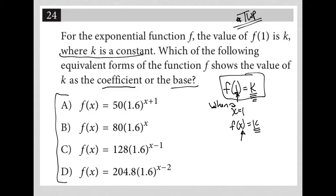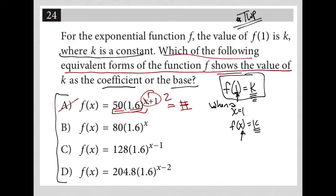For choice A, if I replace x with 1, that makes the whole exponent equal to 2, and I'd have 50 times 1.6 to the second power, which gives some other number. That number is not going to be 50 and it's not going to be 1.6 — meaning the value I compute is not already listed in the function. The question asks which form shows the value of k as the coefficient or base, and that's not what we get from choice A, so A is wrong.